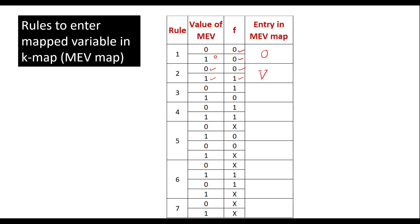Rule 3: if the value of MEV and the value of the function are complements of each other — that is, MEV value is 0 but function value is 1, and MEV value is 1 but function value is 0 — in that case we write the complement of the variable, V-bar. Whatever variable we have considered, its complement is entered in the MEV map.